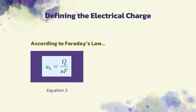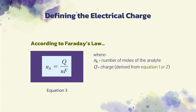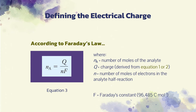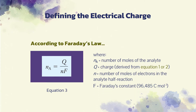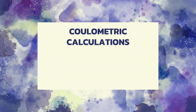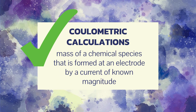This is given by equation 3, where N sub A is equal to the number of moles of the analyte, Q is the charge, which could also be derived using equation 1 or 2, N is the number of moles of electrons in the analyte half reaction, and F is Faraday's constant. Having these definitions, we are now able to calculate the mass of a chemical species that is formed at an electrode by a current of known magnitude. This is the core principle of coulometric methods of analysis.